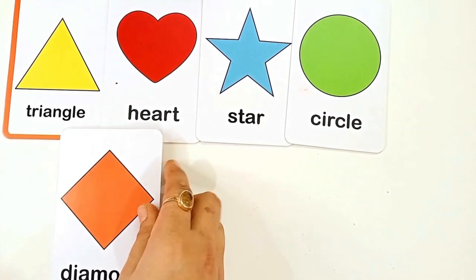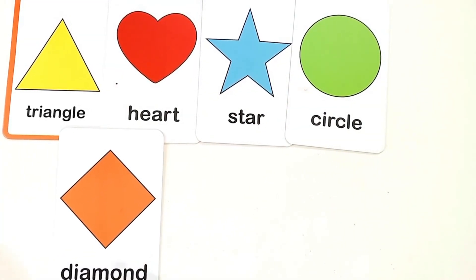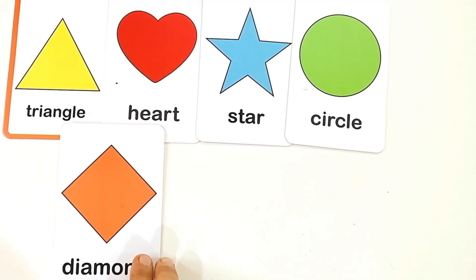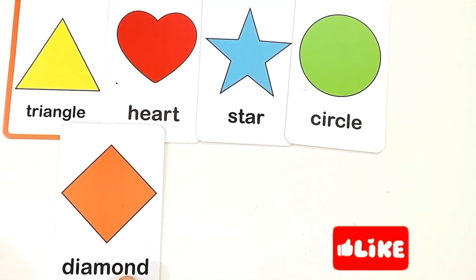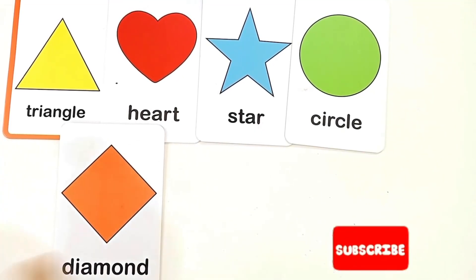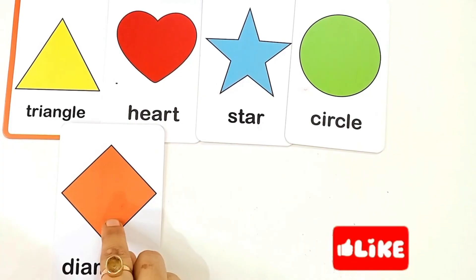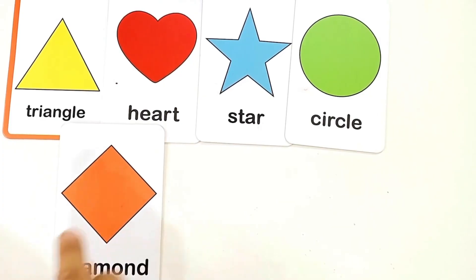D for diamond. D-I-M-O-N-D diamond. This is diamond shape. And the color is orange color.